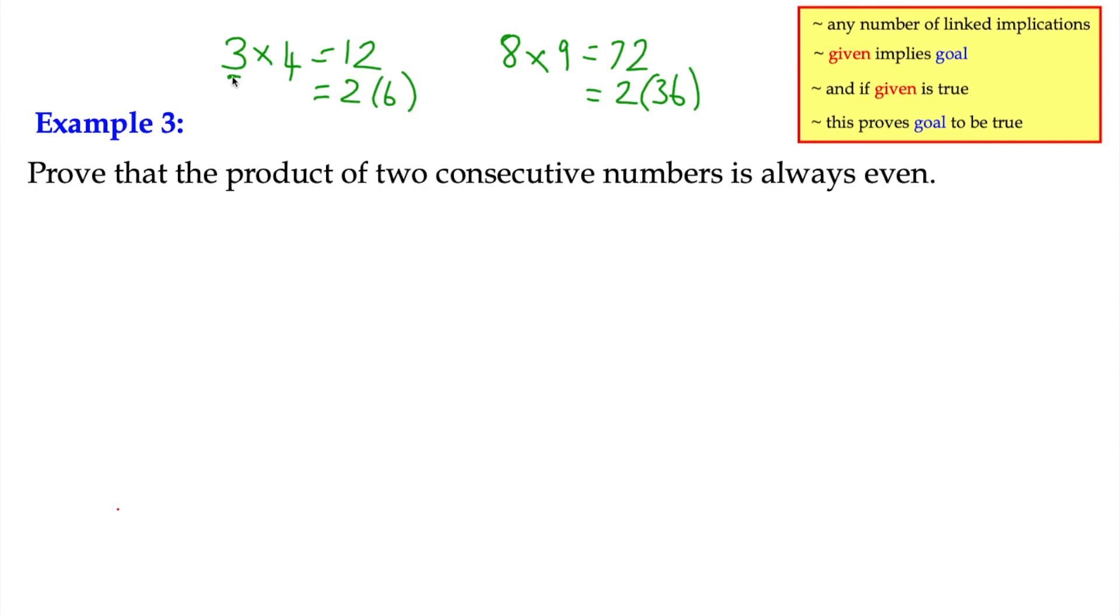So you notice here that in the first example, 3 is odd, and in the second one, 8 is even. So really, to cover our bases, we want to think about what happens if the first number is odd, and what happens if the first number is even, because there might even be a difference there. You've got to cover all your bases. So let's look at the first number odd.